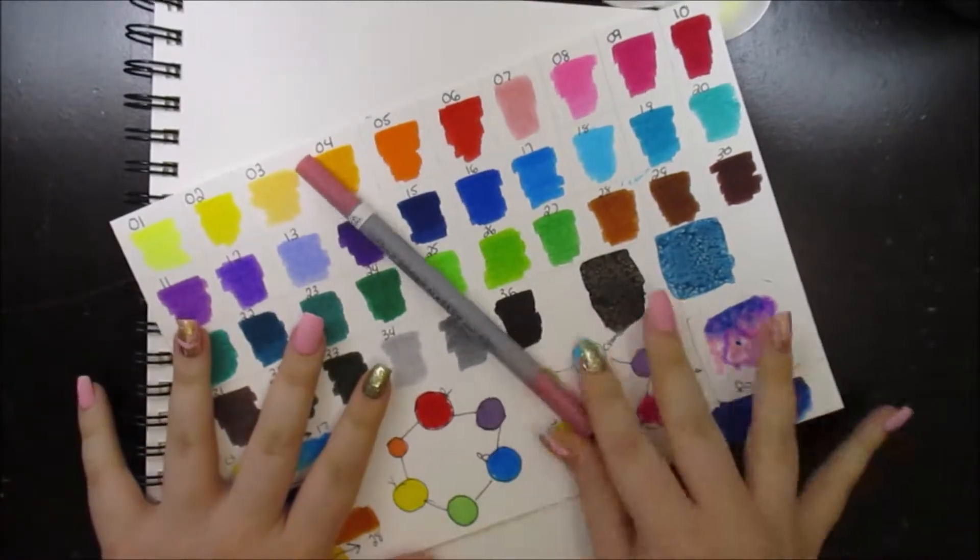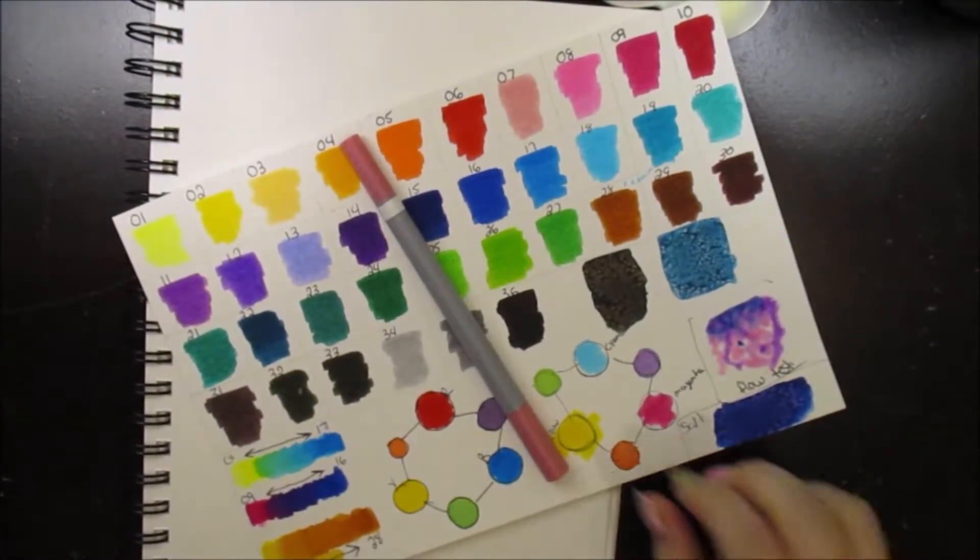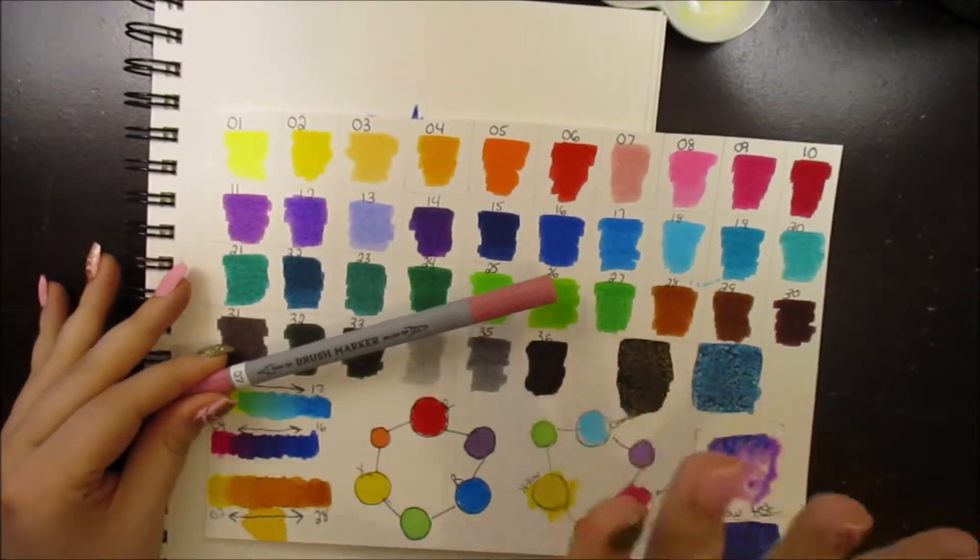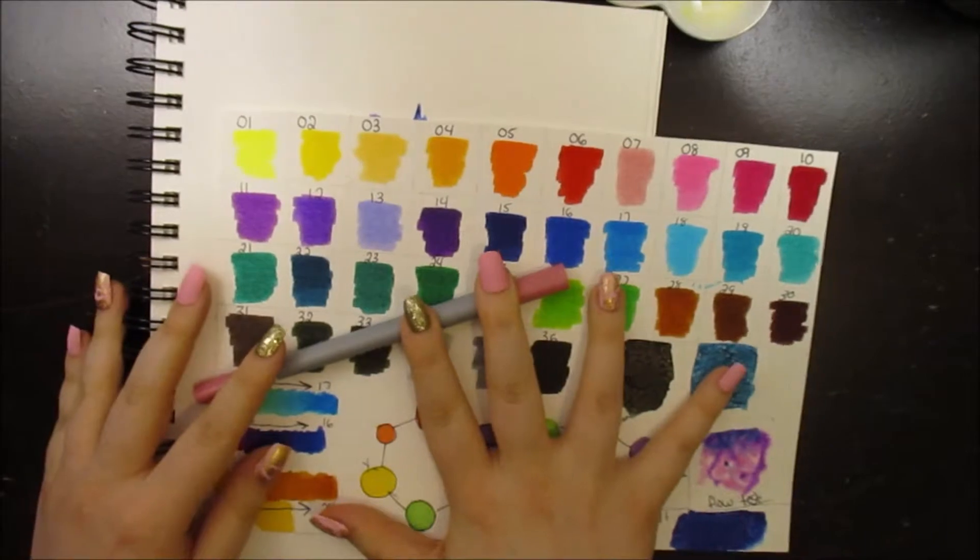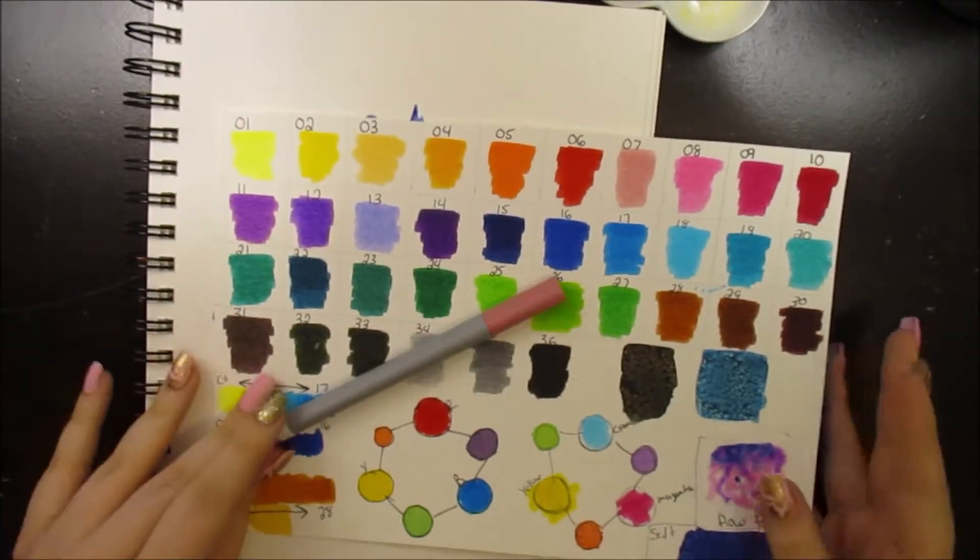But they're always 40% off. Always, always, always 40% off. So I got them for around $12 with a coupon, which breaks down to $0.33 a marker. That is absolutely crazy. That is insane. If you know anything about markers, you know that's super cheap.